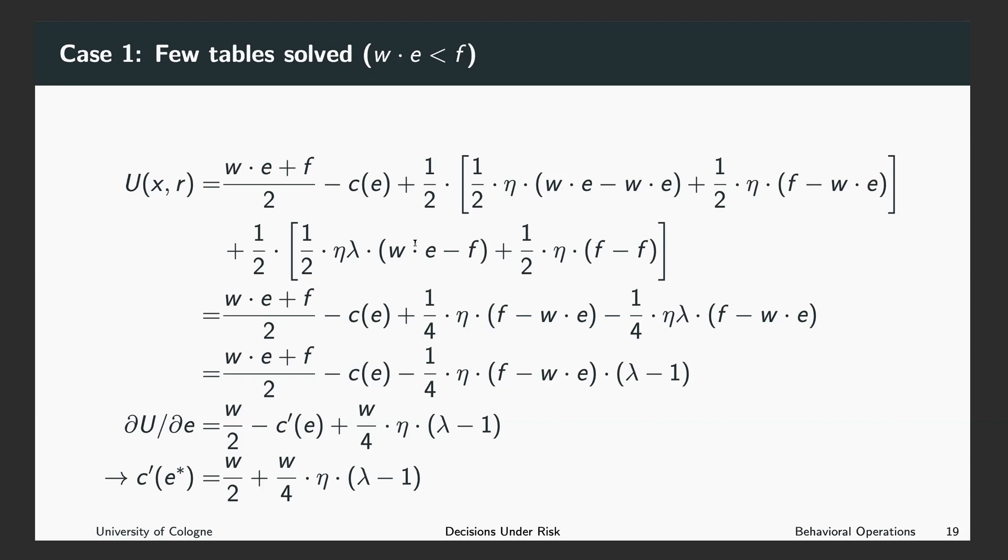So we are left over with this case where we expected the fixed payment, but received the piece rate. And as the piece rate is smaller than the fixed payment, this is negative. This means we suffer a loss. And as we suffer the loss, this has to be multiplied with eta times lambda, where lambda is the gain loss utility parameter, which tells us how much more we suffer from losses than we benefit from gains.